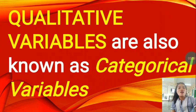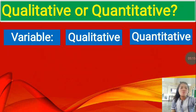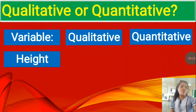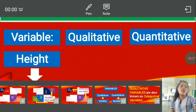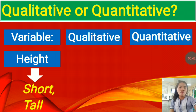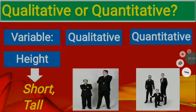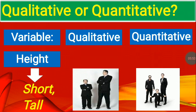Qualitative variables are also known as categorical variables. Now, qualitative or quantitative? Let's say if you have the height, considering the height, if the height is short or tall, what do you think should be the answer if you are asked to identify whether or not it falls for qualitative or quantitative? Considering that picture. Is it qualitative or quantitative kind of variable?